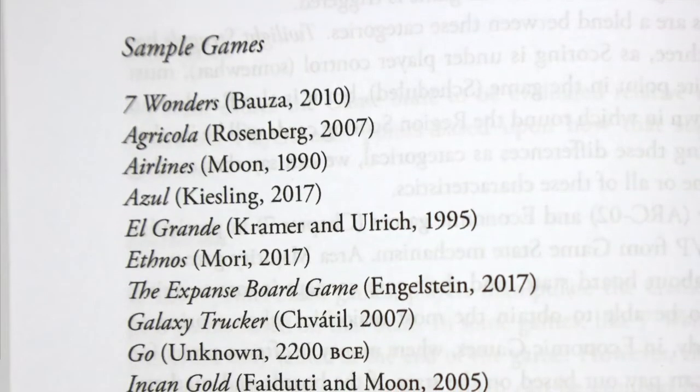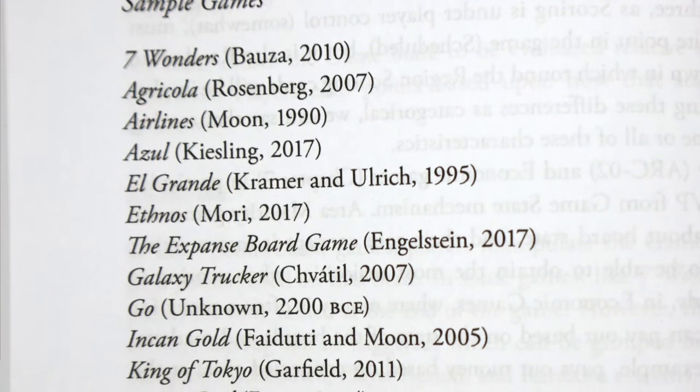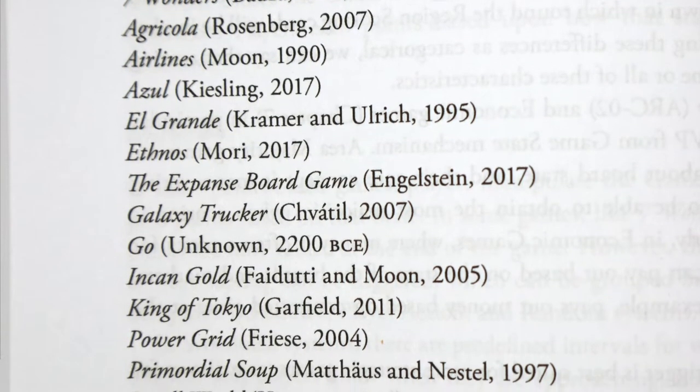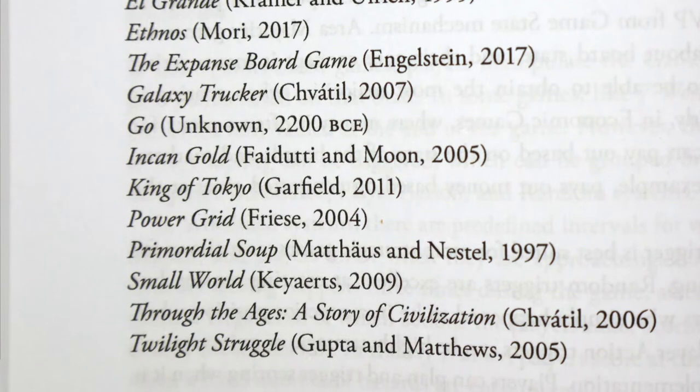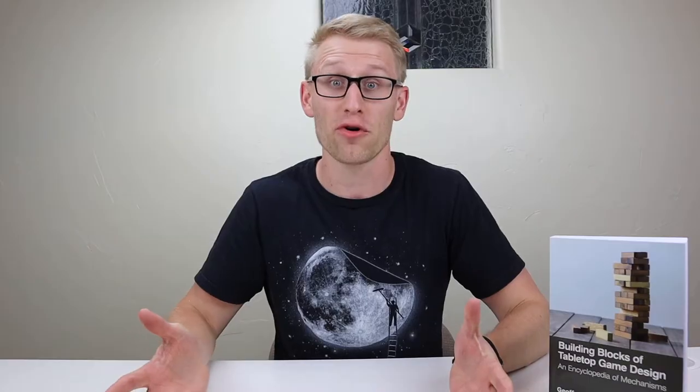Another big benefit is how the book uses so many examples of both modern and older tabletop games that exemplify these different mechanisms. This makes a lot of sense, because mechanisms really start to make sense and flourish once they're in the context of a game design. Reading through the discussion and hearing how a mechanism is used in a specific game and how it affects that experience was a very rich experience. Your experience with the book is probably going to rely a lot on what your exposure to modern board games is.